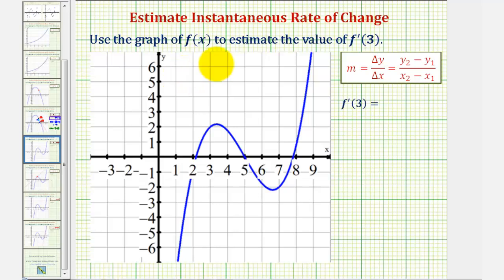We want to use the graph of f(x) to estimate the value of f'(3), or the value of the derivative function at x equals three. f'(3) is equal to the slope of the tangent line at x equals three. It also gives us the instantaneous rate of change of the function at x equals three.